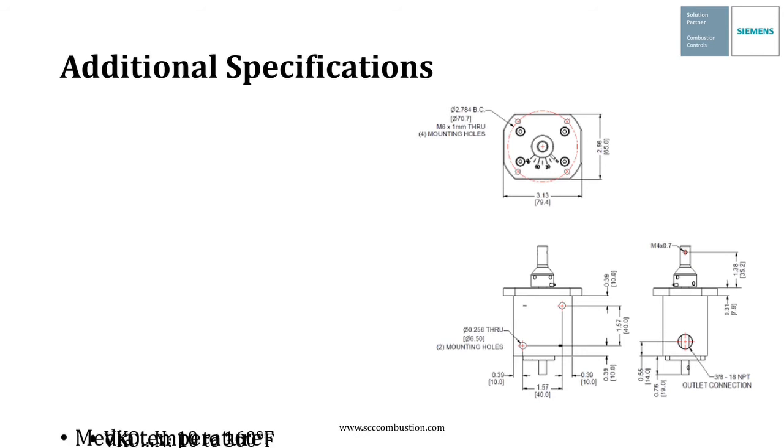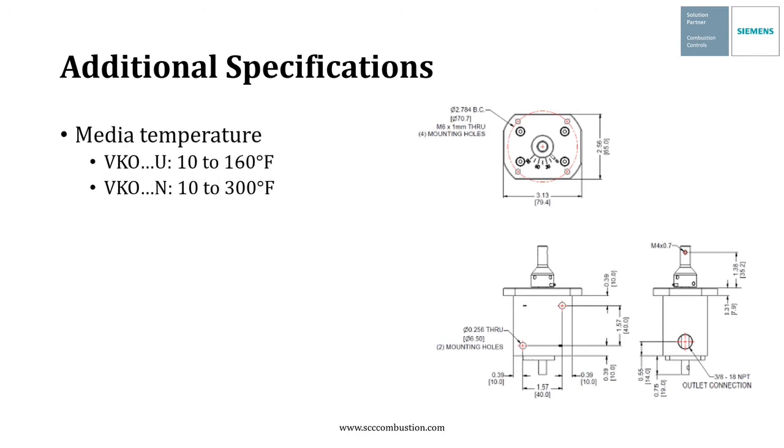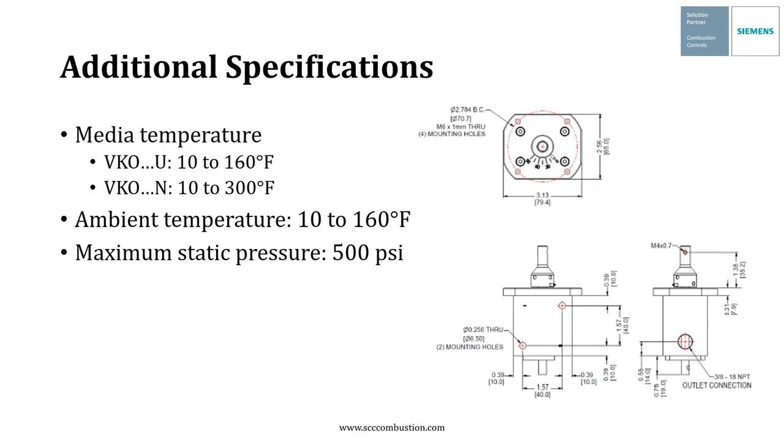Some additional specifications include the media temperature. On the UL approved VKO that fluid can be 10 to 160 degrees Fahrenheit. On the non-UL approved version it can be anywhere from 10 to 300 degrees Fahrenheit. The ambient temperature where the valve is installed should be between 10 and 160 degrees Fahrenheit. The maximum static pressure is 500 psi and the maximum differential pressure across the valve is also 500 psi. And according to ASTM 396, up to 5% biodiesel can exist in number two oil and still be acceptable in the UL approved version.